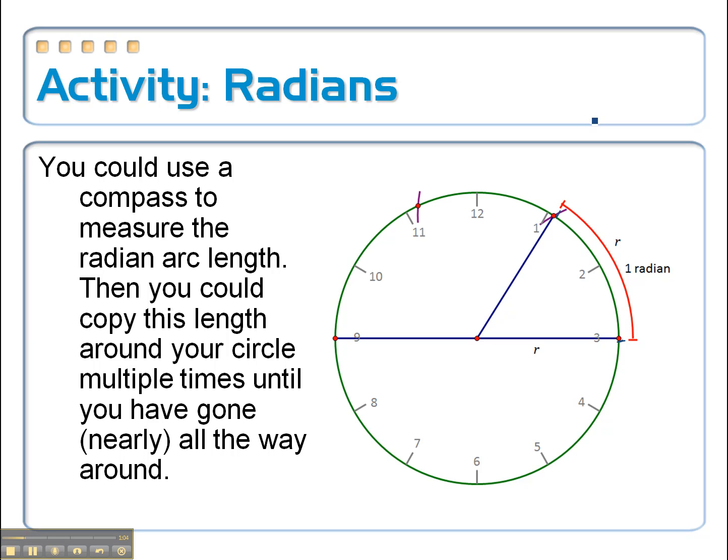So that's 1 radian. If you make another mark, there's 2 radians, there's 3 radians. You see we're almost halfway through. 4 radians, 5 radians, 6 radians.